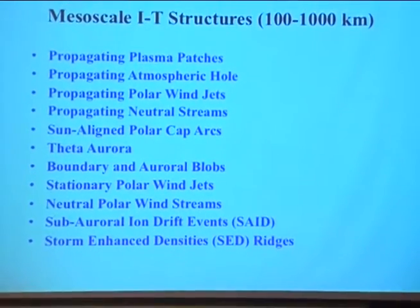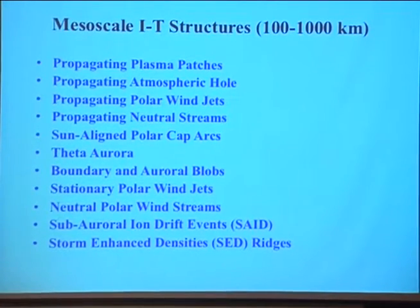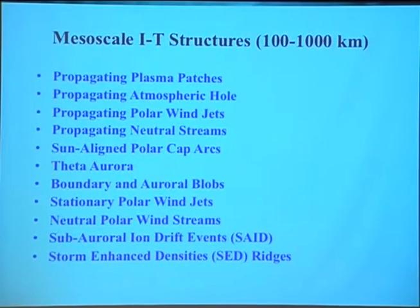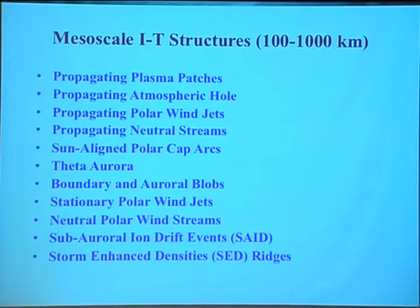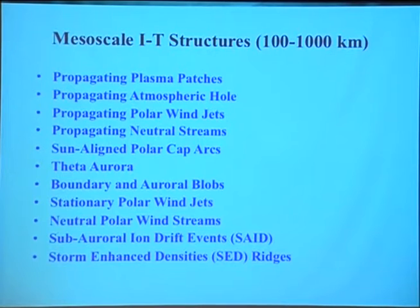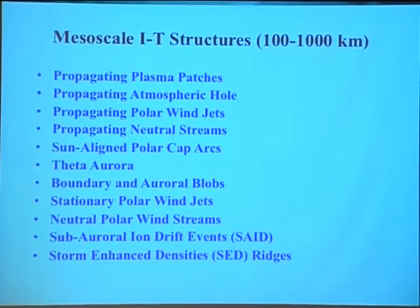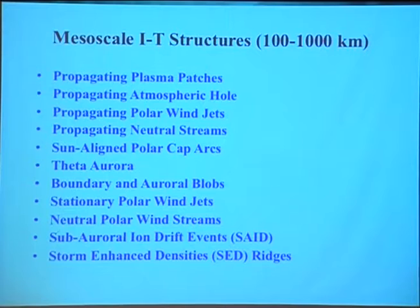Here is a partial list of mesoscale structures: propagating plasma patches, known for 40 years; propagating atmospheric holes; propagating polar wind jets; neutral streams flowing in the thermosphere; sun-aligned arcs; theta aurora; boundary and auroral blobs; stationary polar wind jets; polar wind streams; subauroral ion drift events; and storm-enhanced densities. For young postdocs and students, look at the big picture — the field is wide open in magnetospheric modeling, measurements, and magnetospheric coupling to the ionosphere-thermosphere-plasmosphere-polar wind system. There is a tremendous amount of new first-rate work that can be done.